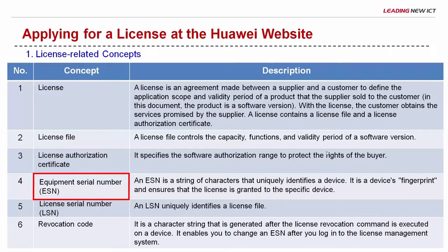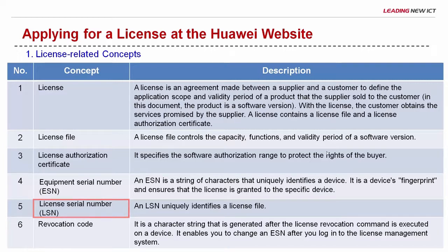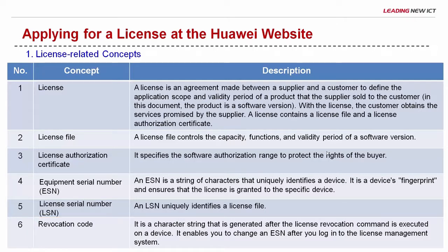ESN is the equipment serial number, which uniquely identifies a device. LSN is the license serial number, which uniquely identifies a license file. ESN and LSN are similar to our ID cards. A revocation code is a character string obtained after you run a command to revoke a license. It enables you to change an ESN after you log in to the license management system.